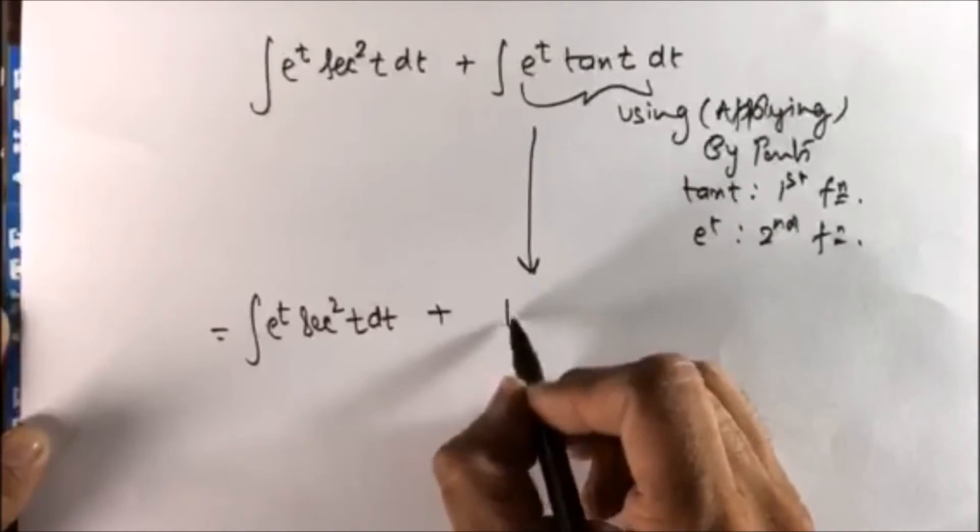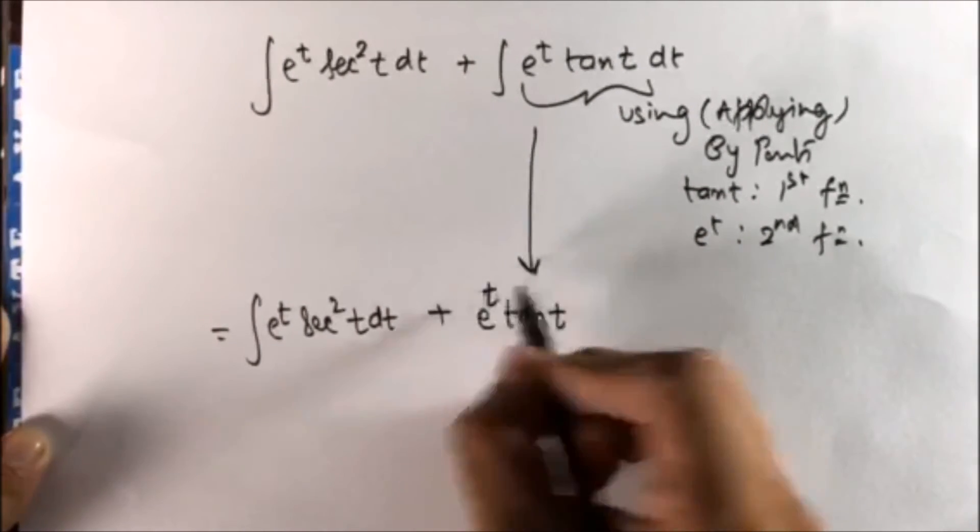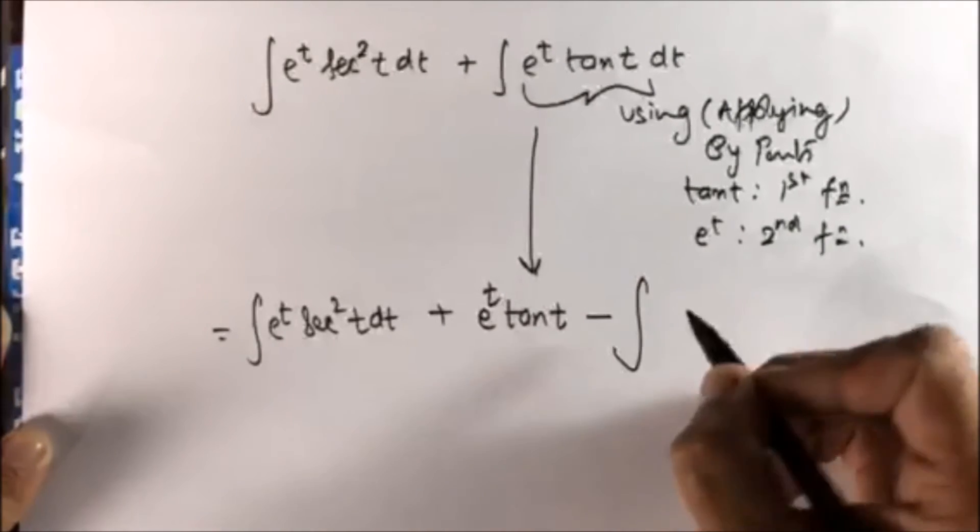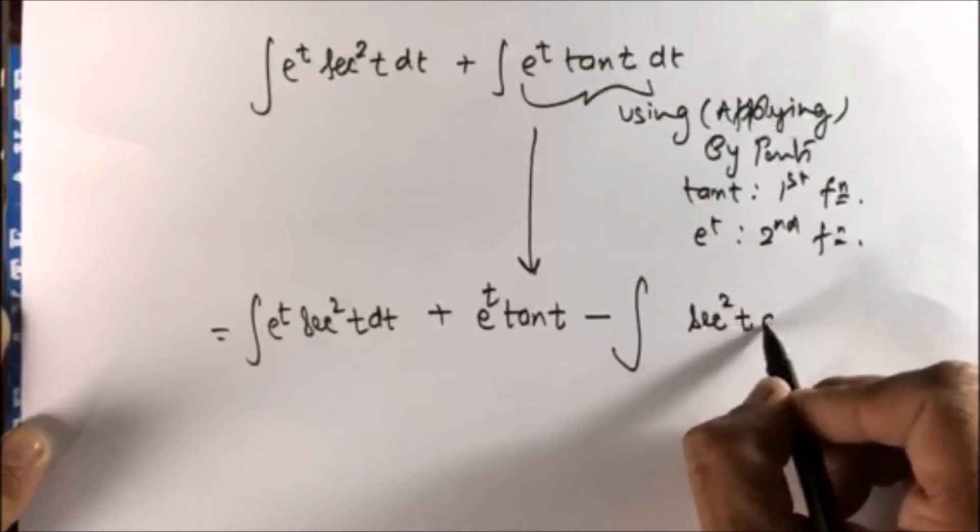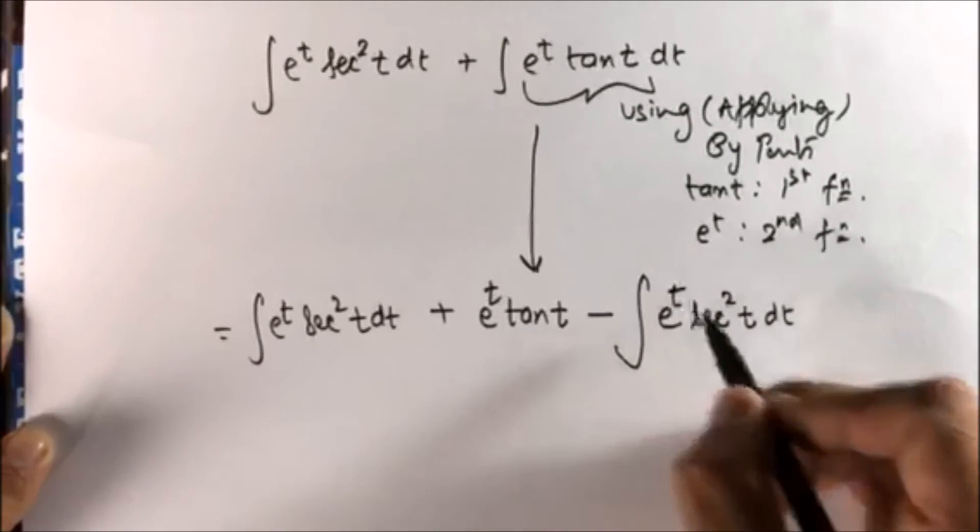So first function tan t as it is, integration of e to the power t is e to the power t, minus the whole integration of derivative of tan t is secant squared t dt and the integration of e to the power t is e to the power t.